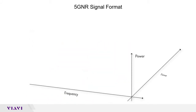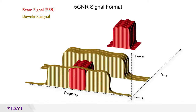Also, the beam signals are not constantly transmitted — they have a cycle. So if we look at the signal in time, the beams are being broadcasted every 20 milliseconds. Despite this complexity in frequency and time, the CellAdvisor 5G can easily characterize these 5G signals using persistence spectrum.